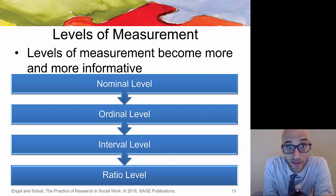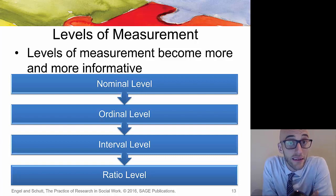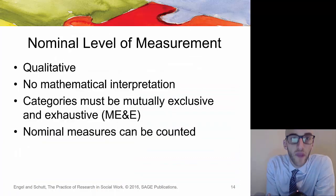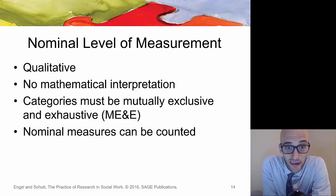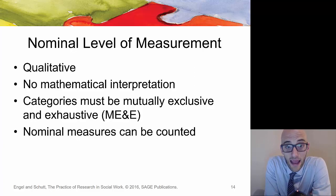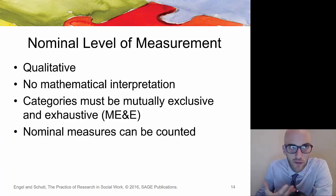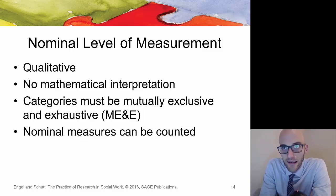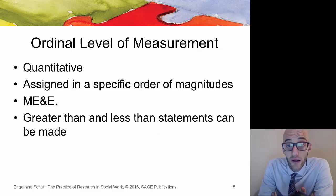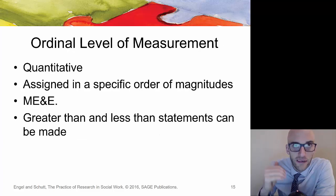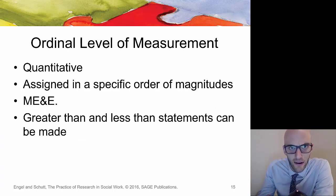Something people struggle with is the different levels of measurement: nominal, ordinal, interval, and ratio. Nominal is a qualitative way of measuring information focused on classification or categorization — there's no mathematical interpretation and categories must be mutually exhaustive. Examples include eye color, hair color, dog, cat — mutually exclusive categories. Ordinal data is more quantitative in nature, reflecting where something lands in an order — first, second, third place — with each measurement assigned a specific order of magnitude, allowing greater-than and less-than statements.